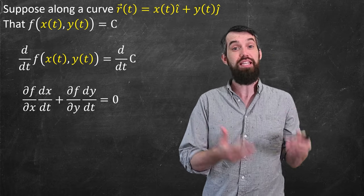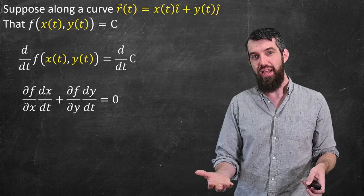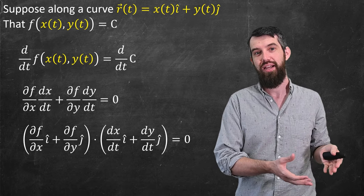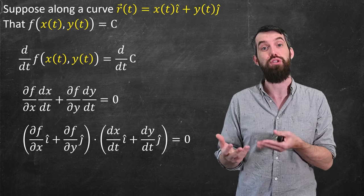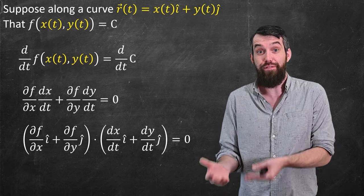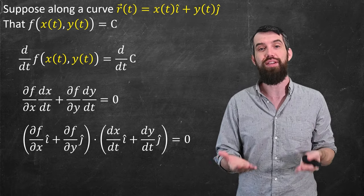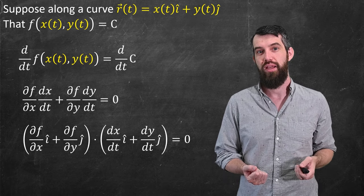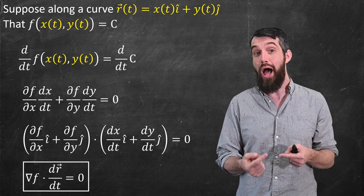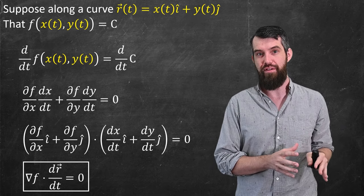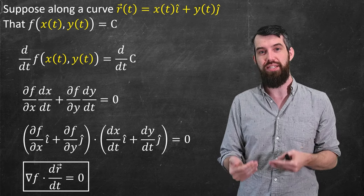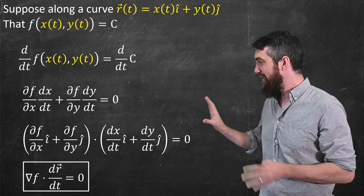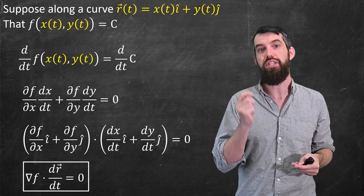We can clean this up a little bit. This is the sum of two products, so I'm going to interpret this as a dot product of two vectors. The first vector has components: partial of f with respect to x and partial of f with respect to y. The second vector has components dx/dt and dy/dt. This is exactly the same expression written as a dot product. The first vector — the partial of f with respect to x and the partial of f with respect to y — is called the gradient of f. That is our definition of the gradient of f. And the derivative of x and y with respect to t is just dr/dt, the tangent vector we've seen previously. So what we get is: the gradient of f dotted with the tangent vector dr/dt equals zero.